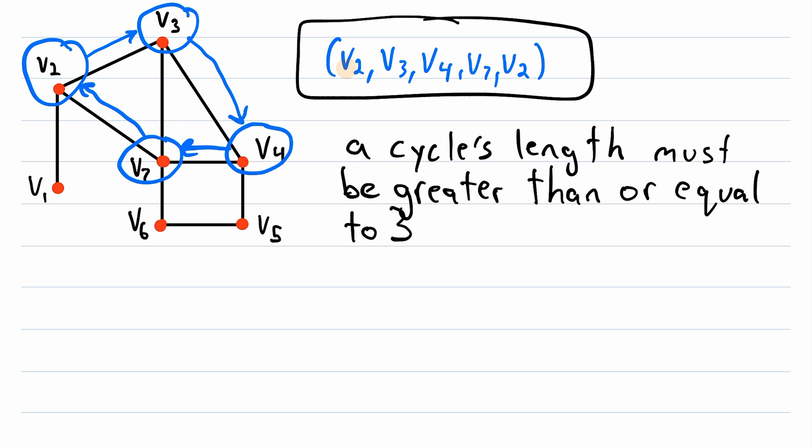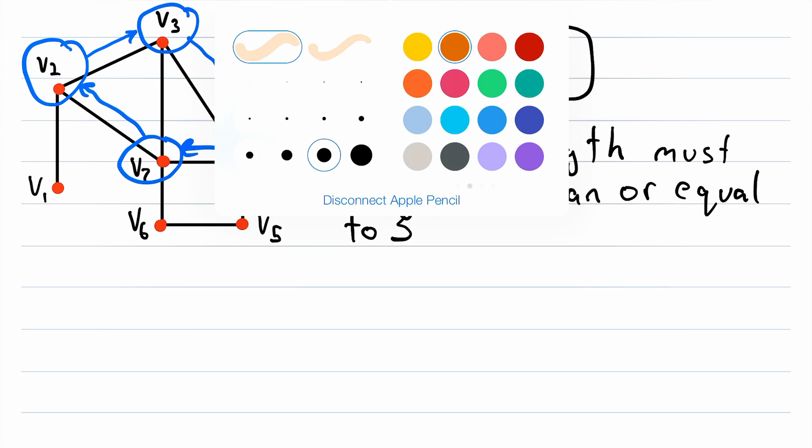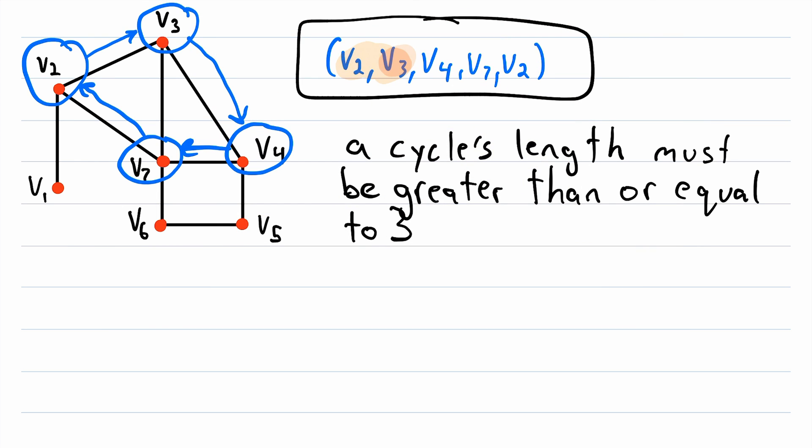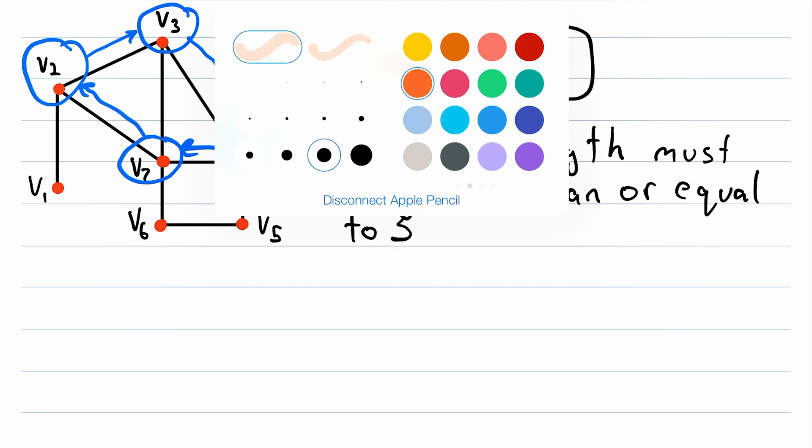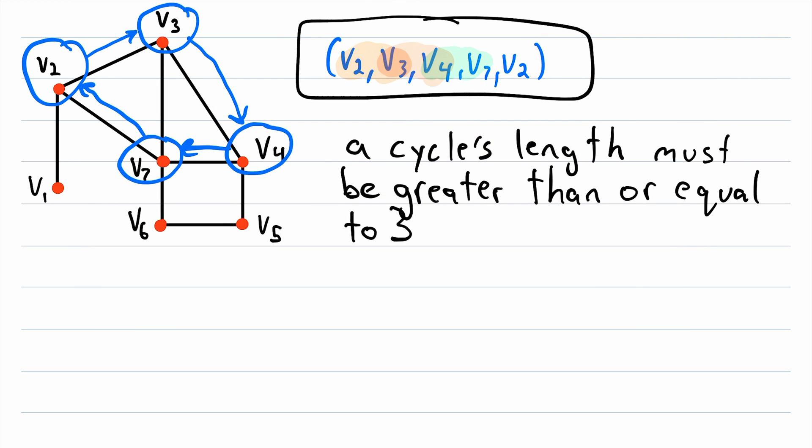We can see that here because v2, v3 is an edge that gets traversed, v3, v4 is an edge that gets traversed, v4, v7 is an edge that gets traversed, and v7, v2 is an edge that gets traversed. So that's four edges, a length of four, which is one less than the number of vertices because there are five vertices in the sequence. Since this cycle has a length of four, we can refer to it as a four cycle. And of course, we use similar terminology for other similar situations, so if we were looking at a cycle of length eight, we could call that an eight cycle.